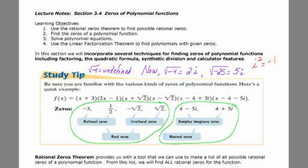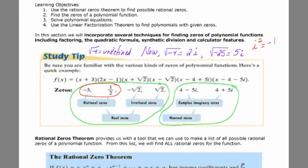These are the types of zeros we might get. The first thing we're going to look at is the rational zeros theorem, something that will help us determine these guys right here.